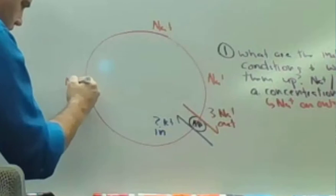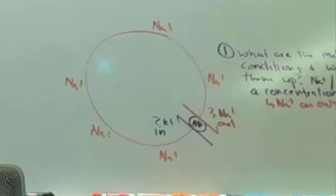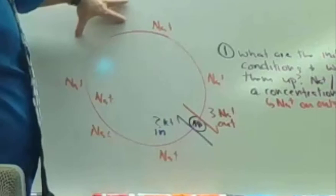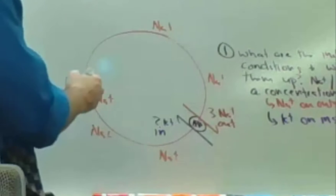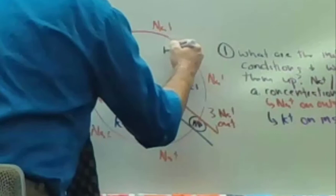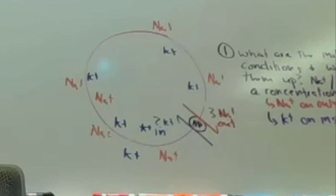Leave yourself some big gaps so we can write some stuff on there. There will be times when we need to talk about how there's sodium on the inside, because you don't pump it all out — you just pump most of it out. Since you're pumping potassium in, potassium is on the inside of the cell. Leave space in the middle because we're going to write in the middle. Some potassium is also on the outside — not all of it is on the inside.